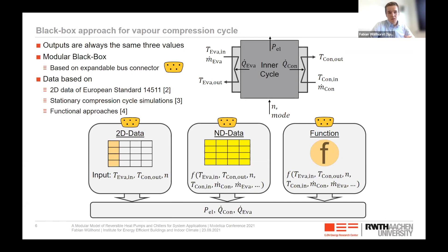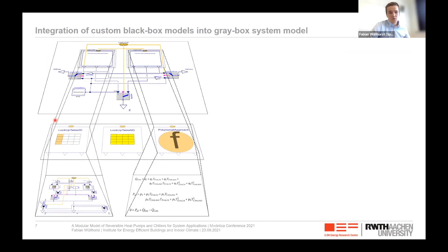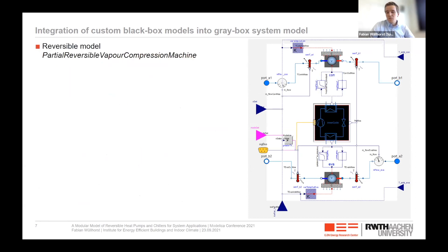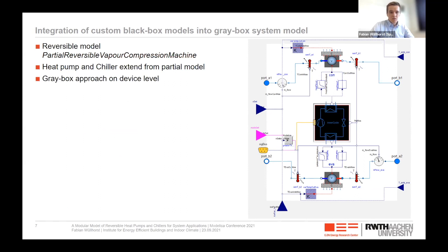To integrate the black box approach into a device model, we aggregate the different options as replaceable models in an inner cycle model — a vapor compression cycle model. We implement one black box model for the chilling operation and one for the heating operation. By using a boolean mode variable, we can switch between them and thus implement a reversible machine. This model is used in the partial reversible vapor compression machine, and by extending this partial model, we get the heat pump and chiller models by specifying whether the device is mainly used for heating or cooling.